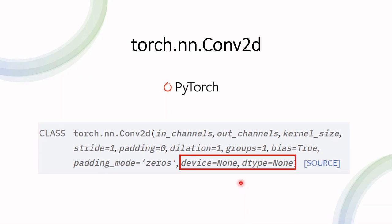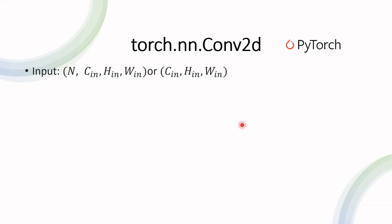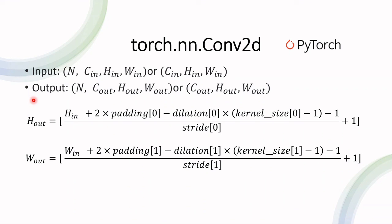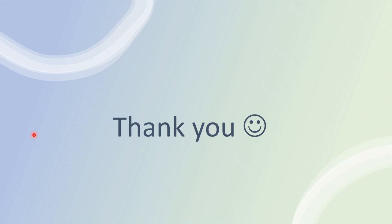The last thing I'd like to talk about is the output dimensions. In the PyTorch documentation you can see that for a given input — whether a single input or a batch containing several instances — each input has the number of input channels, the height, and the width. There are formulas that compute the height and width of the output shapes, which is useful if you have a desired output shape for your model. The output depends on padding, dilation, kernel size, and stride — everything we've covered in defining the convolution layer.